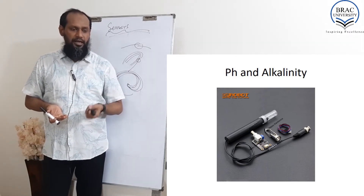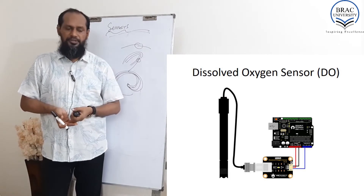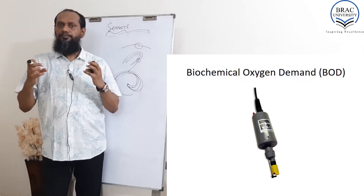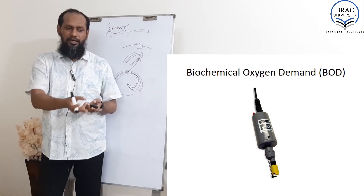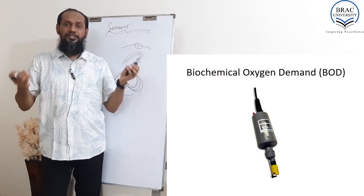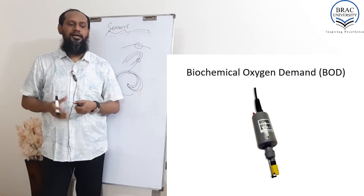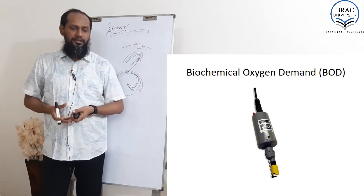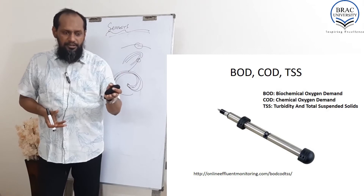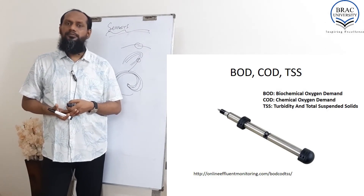One is pH and alkalinity sensor, one is dissolved oxygen sensor - that means the amount of oxygen inside the water, which is a very expensive sensor. One is biochemical oxygen demand. For pure water, it requires some oxygen - it is actually the reverse of the dissolved oxygen sensor. There is also the biochemical oxygen demand sensor, measuring what oxygen is demanded according to the chemical properties inside the water. Biochemical oxygen demand, chemical oxygen demand, and turbidity and total suspended solids can also be measured.